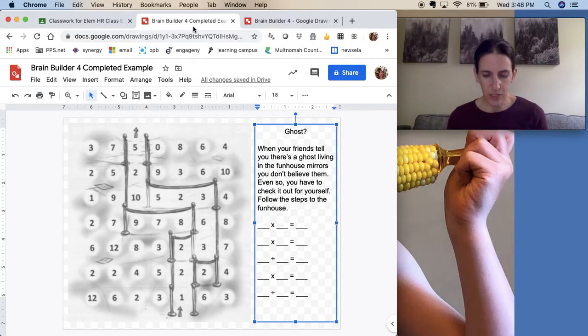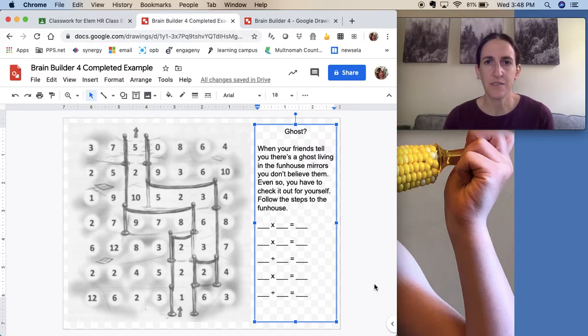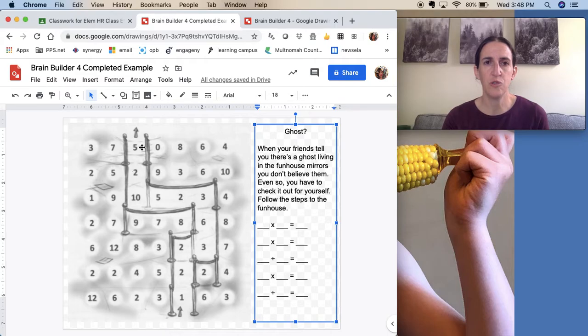Okay, so in the instructions, it says read the text to learn where you are in the adventure and to see hints about how to solve the puzzle. So this whole book kind of follows a storyline of an adventure. It's just kind of silly. And these little stories sometimes give you hints on how to solve it. So go ahead and read that part. Ghost. When your friends tell you there's a ghost living in the funhouse mirrors, you don't believe them. Even so, you have to check it out for yourself. Follow the steps to the funhouse. So you have to work your way through this maze to get to the funhouse, which is the exit. Then the funhouse is on the next page.